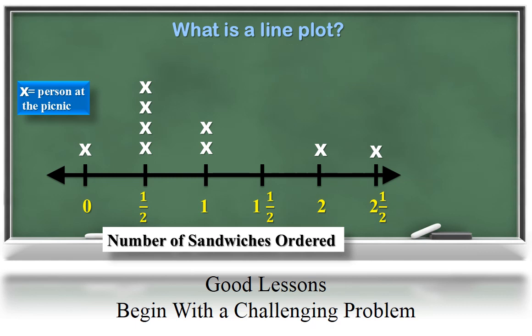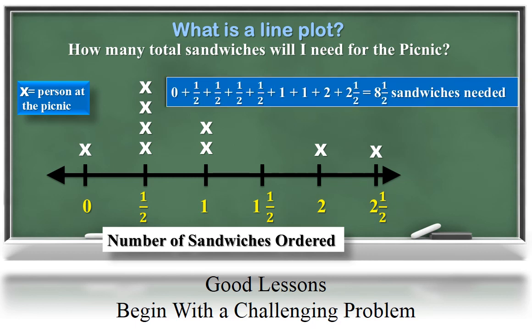However, in this scenario, the students were asked how many total sandwiches would be needed for the picnic. They could merely add all of the values, one zero, four halves, two wholes, one two, and one two and a half. And the total would be eight and a half sandwiches that are needed for all of the orders.